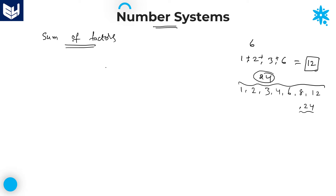I will explain that concept. Whenever we calculate sum of factors for big numbers, it is a difficult task. The concept is very simple. The first step is a common step, as with number of factors: whatever number is given, write it down in terms of prime factors — that is, in the form a power p into b power q into c power r, and so on.